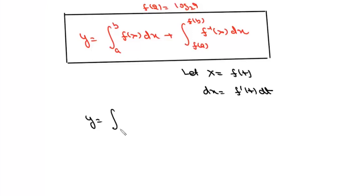So this y will be the integral from a to b of f(x)dx plus, now f inverse of f(t) is simply t, and dx is f'(t)dt. Now if we put x as f(a), the lower limit will be a and upper limit will be b.